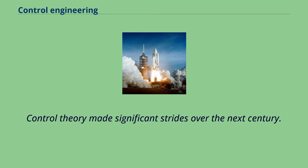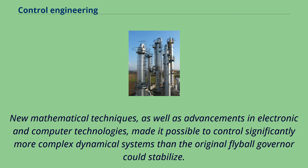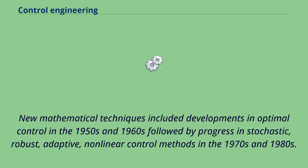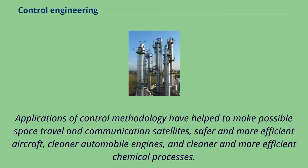Control theory made significant strides over the next century. New mathematical techniques, as well as advancements in electronic and computer technologies, made it possible to control significantly more complex dynamical systems than the original flyball governor could stabilize. New mathematical techniques included developments in optimal control in the 1950s and 1960s, followed by progress in stochastic, robust, adaptive, and non-linear control methods in the 1970s and 1980s. Applications of control methodology have helped make possible space travel and communication satellites, safer and more efficient aircraft, cleaner automobile engines, and cleaner and more efficient chemical processes.